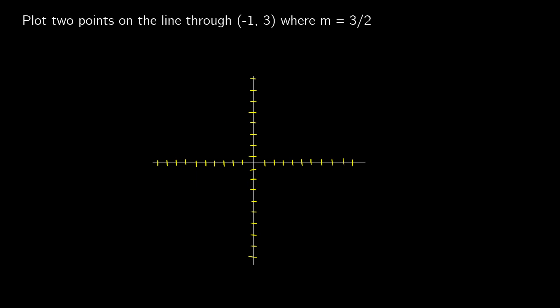Plot two points on the line through negative 1, 3 where m equals 3 over 2. We're given a point and a slope and need to find two more points. Starting at negative 1, 3, with slope 3 over 2 we go 3 up and 2 to the right. So from negative 1, 3, we move to x equals negative 1 plus 2, which is 1, and y equals 3 plus 3, which is 6. So one new point is 1, 6.